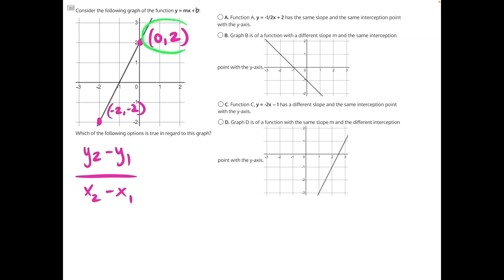Let's use this coordinate point for our y2 and x2. So we will have two over zero minus, and then we will grab a new color and use our second point. So we'll have negative two and negative two.